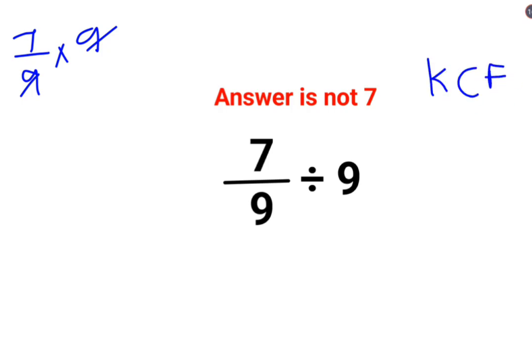You need to follow the rule of KCF where K stands for keeping the first number as it is, C stands for changing the division sign to multiplication, F stands for flipping or taking reciprocal of 9 which is 1 upon 9.